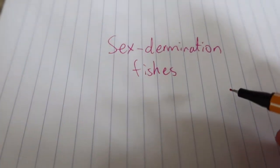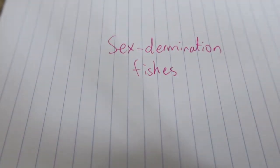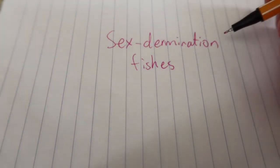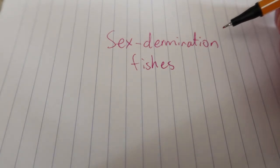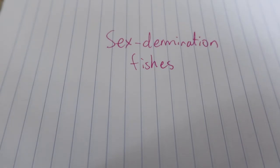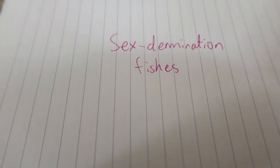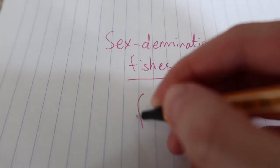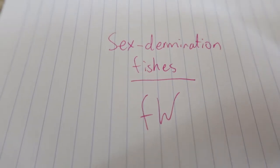Today's video is about sex determination in fishes. This is the process where it determines how individuals of a species or genus develop their sexual characteristics. I'm talking about fishes, generally freshwater, because fishes have a lot of different methods.